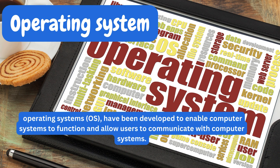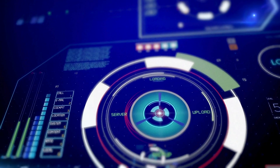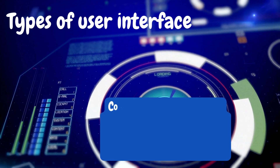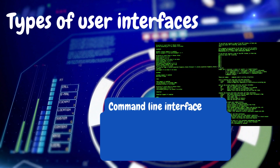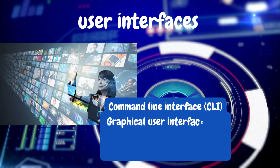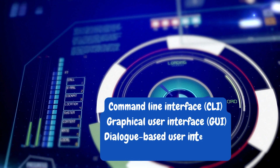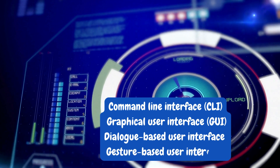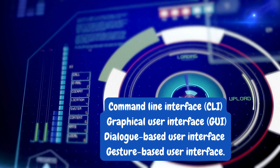Operating systems offer various types of user interfaces. There are four different types: 1. Command Line Interface, CLI. 2. Graphical User Interface, GUI. 3. Dialog-Based User Interface. 4. Gesture-Based User Interface.